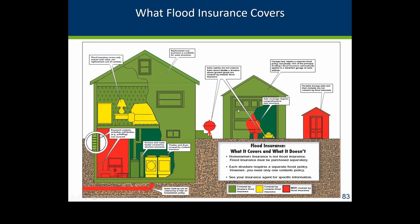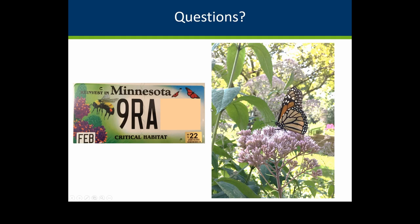One last point on flood insurance: lenders typically require coverage for the building. You can get up to $250,000 in building coverage for residential and $500,000 for non-residential. Contents are a separate policy obtained at the same time — very limited coverage in a basement but covers most items in upper levels. We'll cover more details in our separate flood insurance training session.